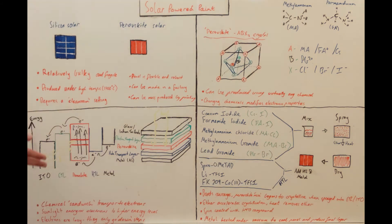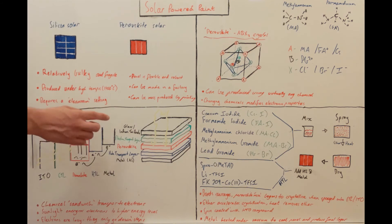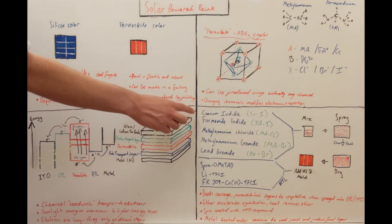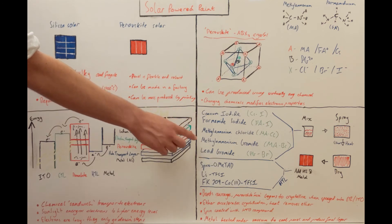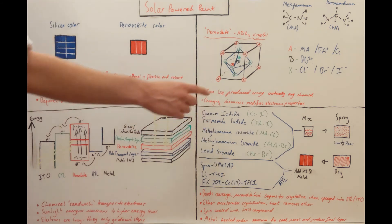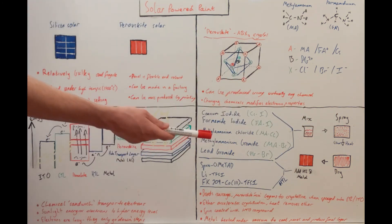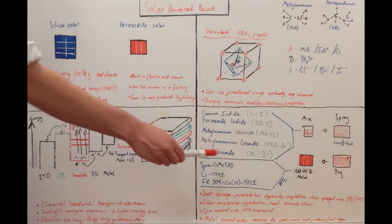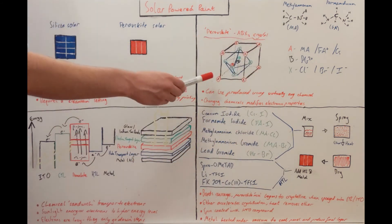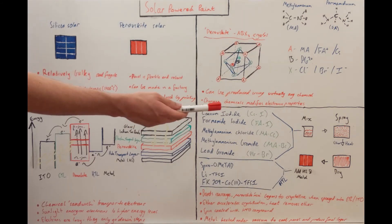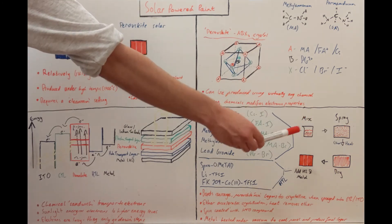To make the perovskite solar paint, the surface first needs the glass indium tin oxide and the electron transport layer already in place. To make the ink, we mix together cesium iodide, formamidinium iodide, methyl ammonium chloride, methyl ammonium bromide, and lead bromide in a large beaker. We then spray it onto those first two layers. Once sprayed, the crystal begins to form as individual bonds break and the crystal structure assembles. Because crystallisation is slow, the panel is dipped in a little ether, which speeds up the process significantly.